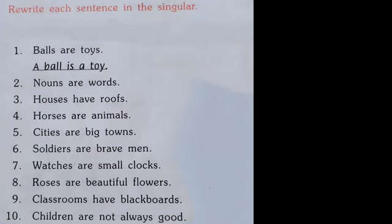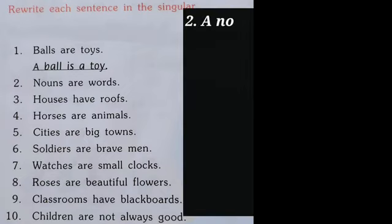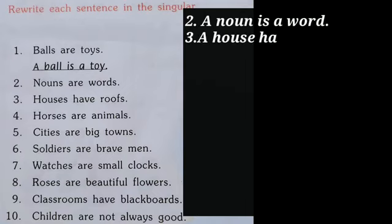In the last question, we do the opposite — changing plural to singular with necessary changes. The first one, 'Nouns are words', is rewritten as 'A noun is a word'. Remember, 'a' or 'an' has to be placed depending on the first letter of the word. Since noun and word do not start with a vowel, we use 'a' before them, and 'are' changes to 'is'. Similarly, 'Houses have roofs' changes into 'A house has a roof' — just as 'is' changes to 'are' when pluralizing, 'have' changes to 'has' when converting back.